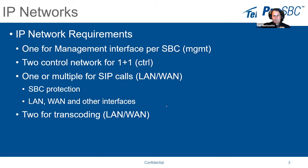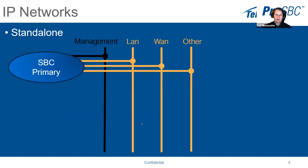If you need transcoding in the system, you will need two additional interfaces of type LAN 1. When you allocate those interfaces, you will assign them for controlling or transferring RTP to the transcoding devices.